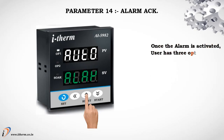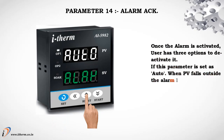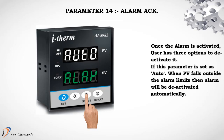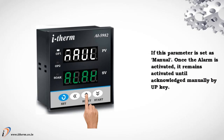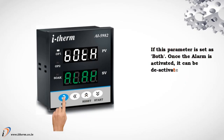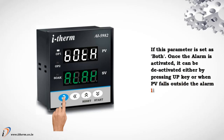Parameter 14: Alarm Acknowledged. Once the alarm is activated, the user has 3 options to deactivate it. If set to Auto, when the process value falls outside the alarm limits, the alarm will be deactivated automatically. If set to Manual, once the alarm is activated, it remains activated until acknowledged manually by pressing the Up key. If set to Both, once the alarm is activated, it can be deactivated either by pressing the Up key or when the process value falls outside the alarm limits.